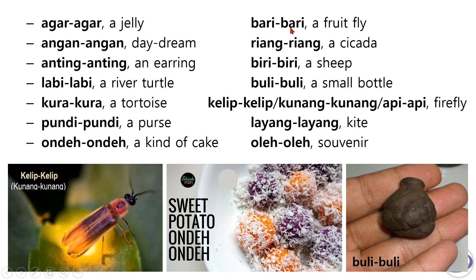Bari-bari, a fruit fly. Riang-riang, a cicada. Biri-biri, a sheep. Buli-buli, a small bottle. Kelip-kelip, or kunang-kunang, or api-api, firefly. Layang-layang, kite.